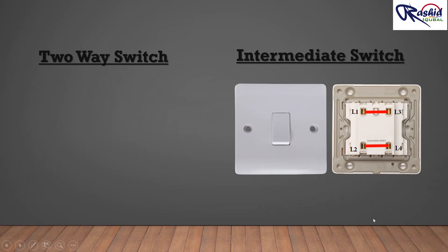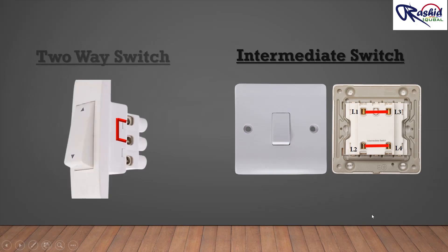Two-way switches. It is the most common type of light switch, especially in small to mid-sized homes. If you have a light and need to control it with two switches, you can use a two-way switch. This is commonly used around stairs.